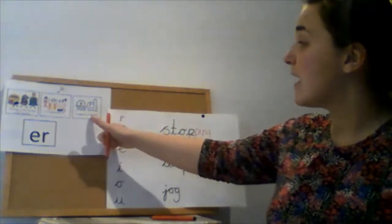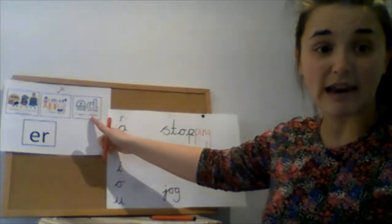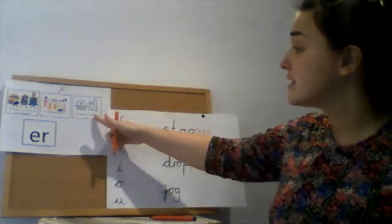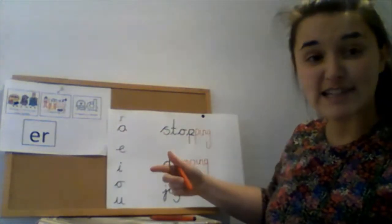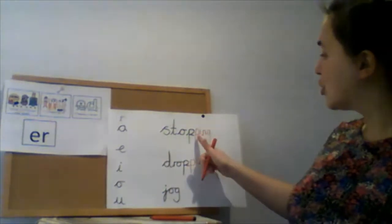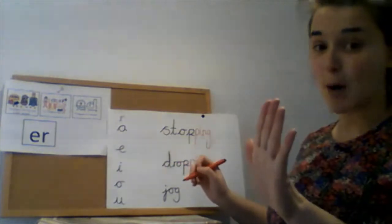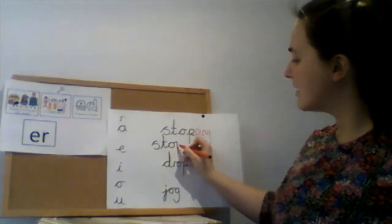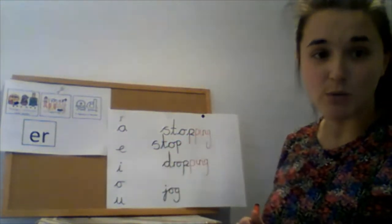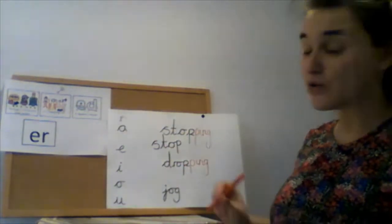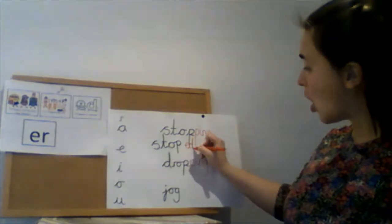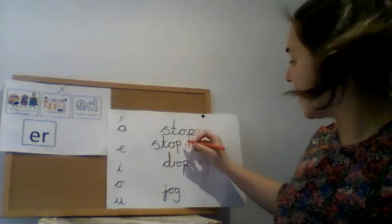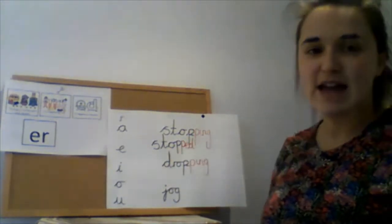And this would be the same if we were adding -ed, the past tense suffix as well. If you can hear a short vowel right before the last letter, you can't just add -ed straight away. You have to double the last letter and then add the suffix. So 'stop' would become 'stopped'. There's the root part of my word, but I can't just add -ed straight away. Because I can hear that there's a short vowel sound, I need to double the p — double the last letter — and then add -ed.